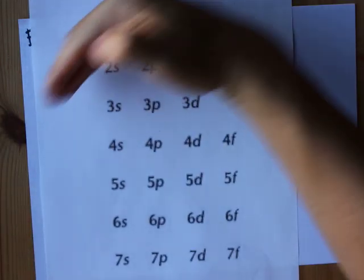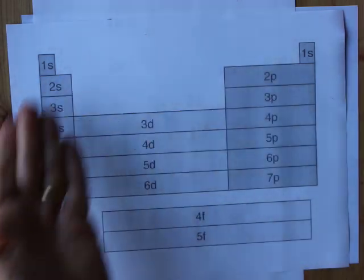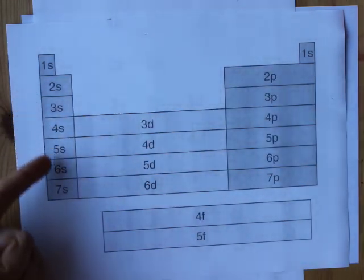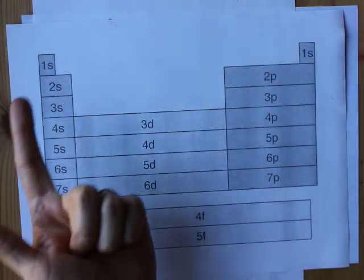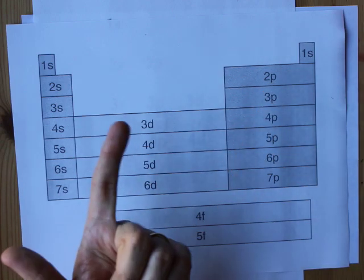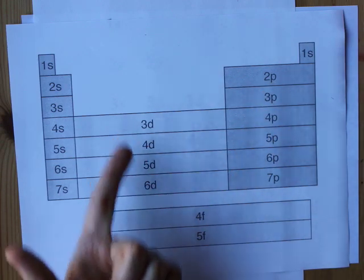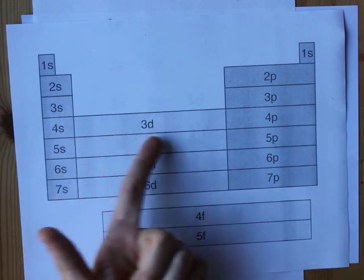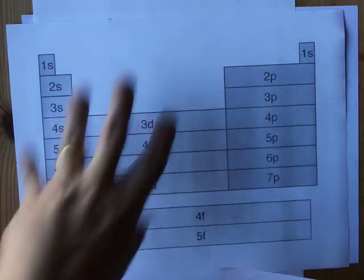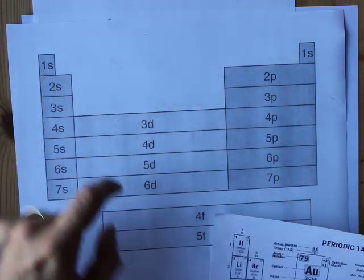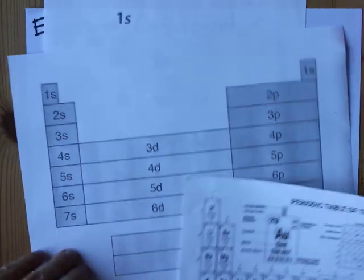Your teacher might have shown you a staircase like this where you draw diagonal lines. I prefer to just know this. It's pretty easy. 1, 2, 3, 4, 5, 6, 7. And then the s's are over here, and the p's are over here, and the d's are here, except they are one behind. So in the fourth row you're at 3d. You'll just get used to it. I've memorized it. I'm sure you will as well, because you're a baller, just like I am.